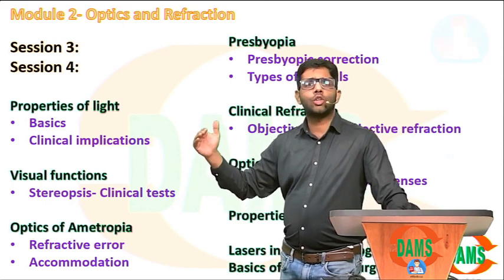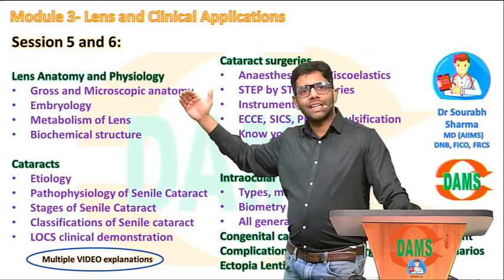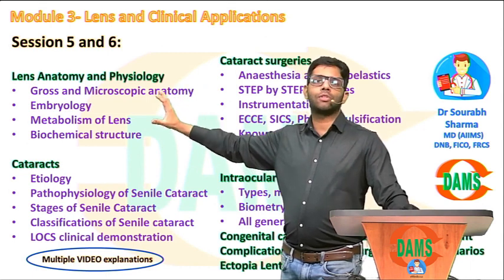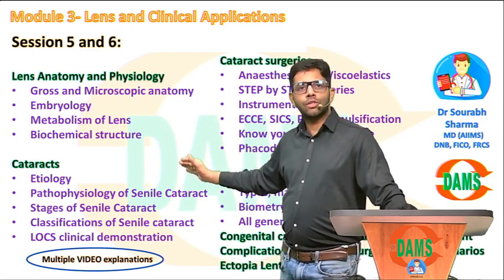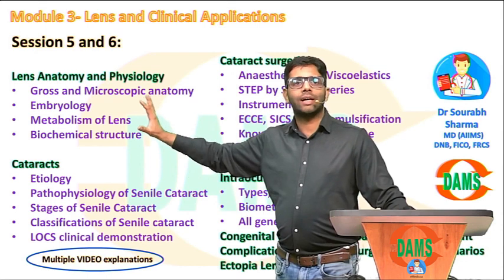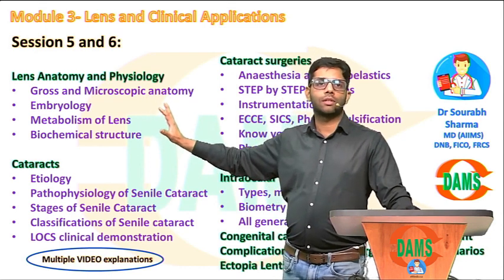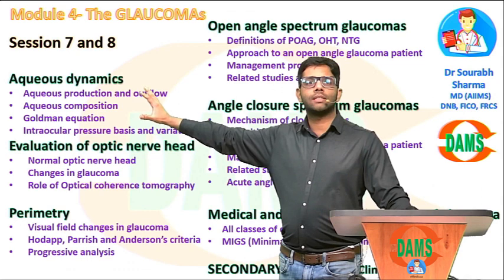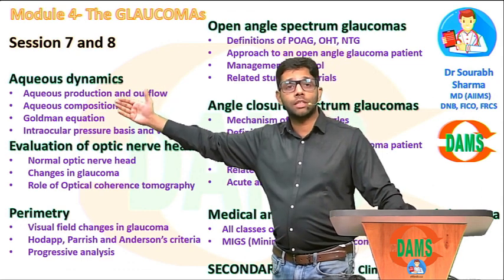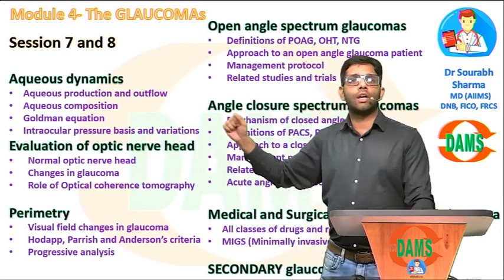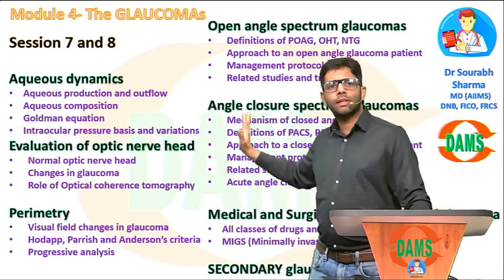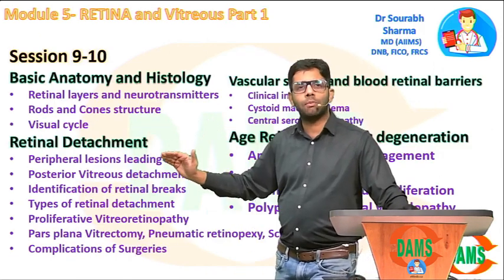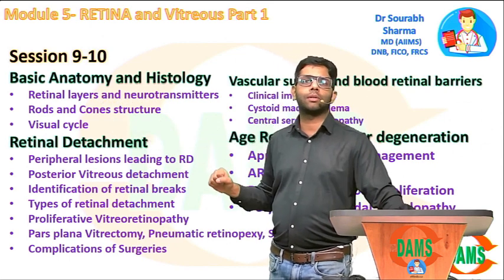Then every clinical topic has been divided starting with anatomy and physiology. For a first year resident, of course you have to see everything as you go on in the residency, but start with anatomy and physiology first. For example, see the anatomy and physiology of the lens, or for glaucoma see the aqueous dynamics and physiology. You can see the evaluation of the optic nerve head, or investigations like perimetry. Do not go with the clinical topics yet — just see the basic anatomy, physiology, and basic histology of the retina for example.